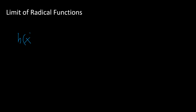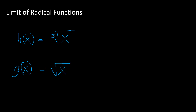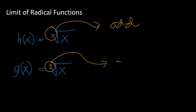For radical functions, consider h(x) = cube root of x and g(x) = square root of x. The key thing to notice is the index. If the index is odd, you can use all real numbers as the value of x — there are no restrictions. However, if the index is even, you must avoid having negative numbers inside the radical, since that would be undefined.